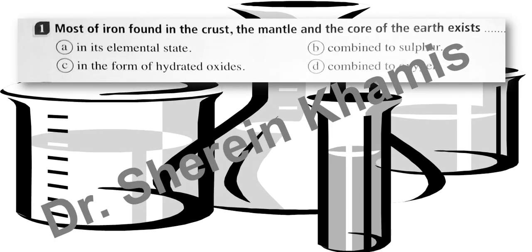Question number 1. It says: most of the iron found in the crust, the mantle, and the core of the earth exists in what form? We have four choices: in its elemental state, combined to sulfur, in the form of hydrated oxide, or combined to oxygen. We can say that it will be combined to oxygen — it will make an oxygenated ore.